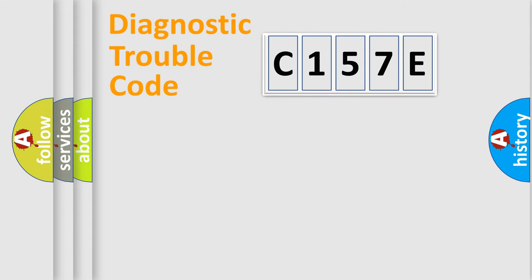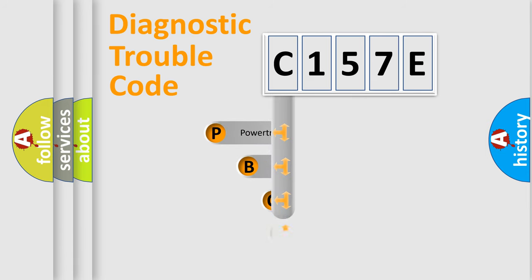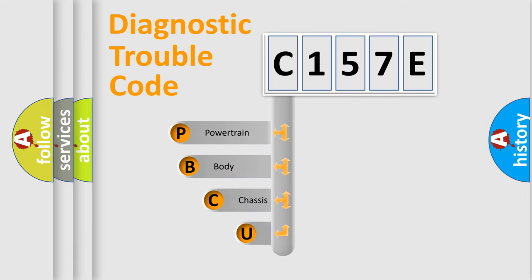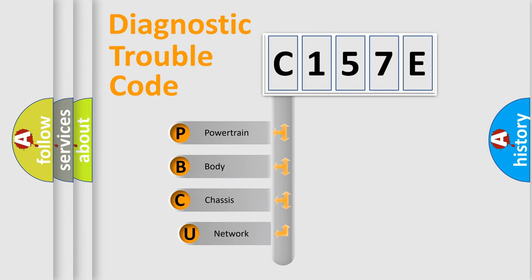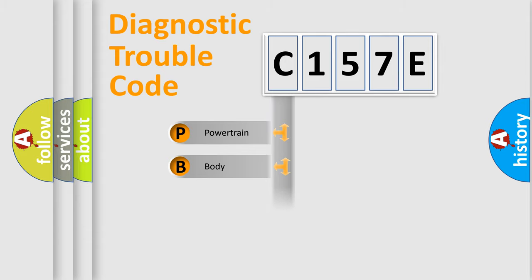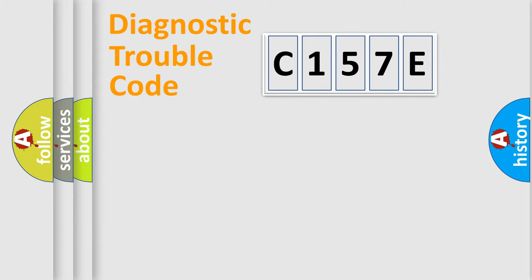Let's look at the history of diagnostic fault code composition according to the OBD2 protocol, which is unified for all automakers since 2000. We divide the electric system of the automobile into four basic units: Powertrain, Body, Chassis, and Network.